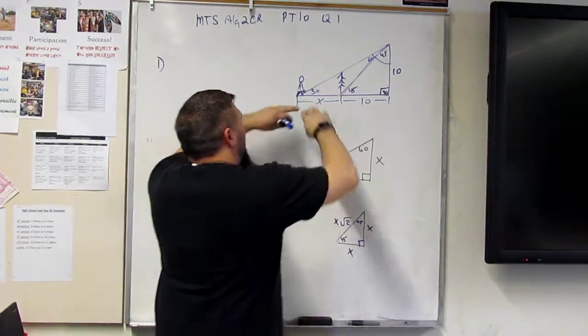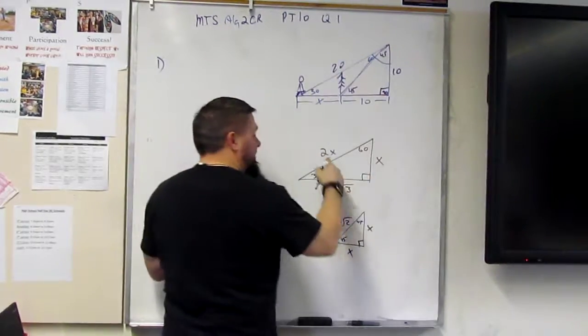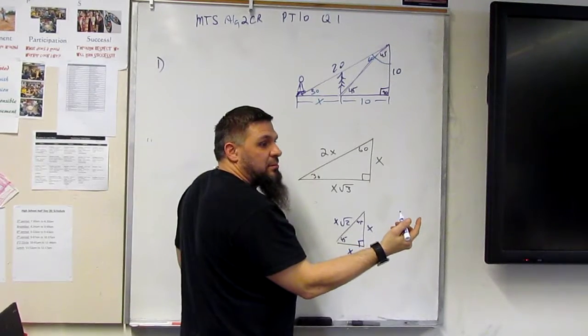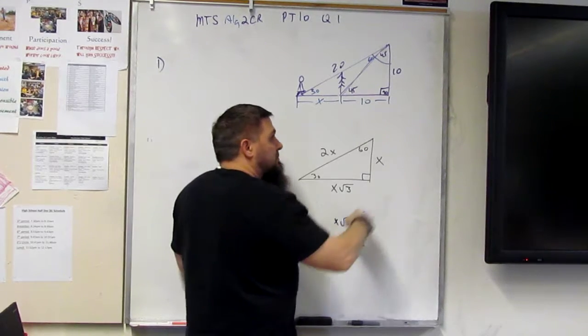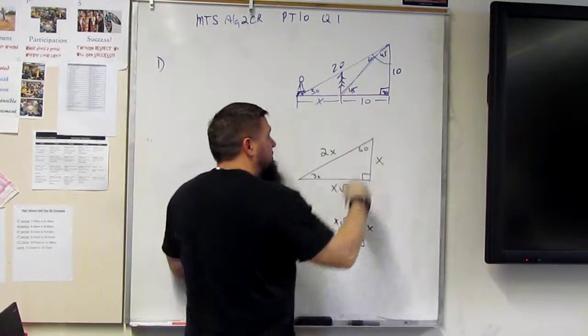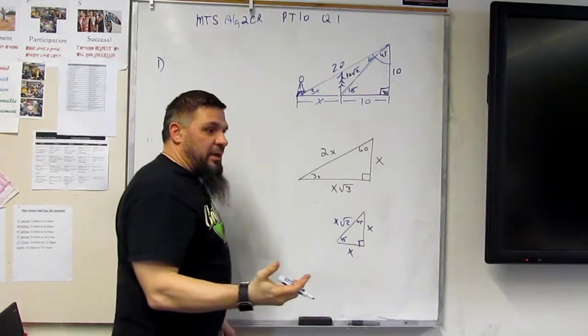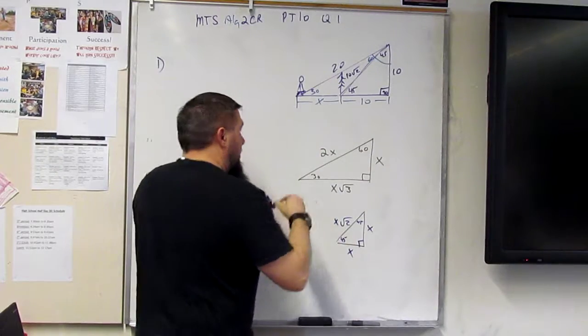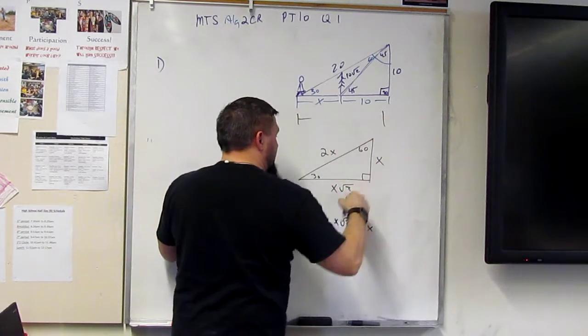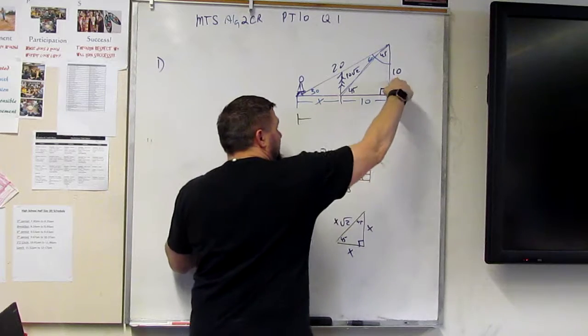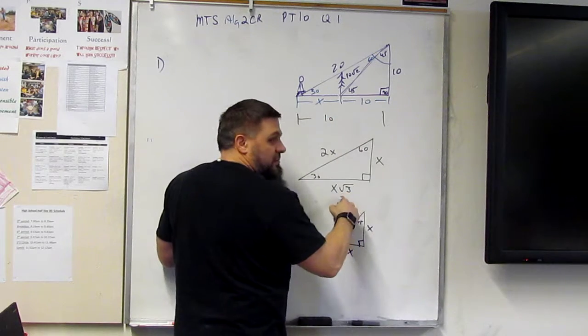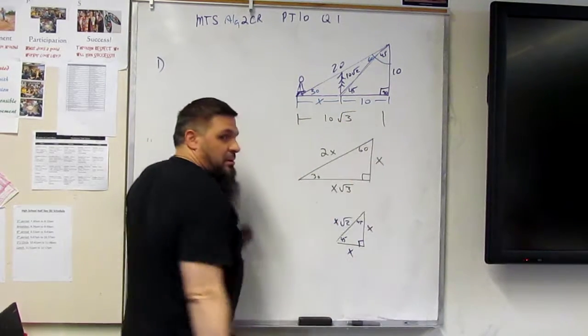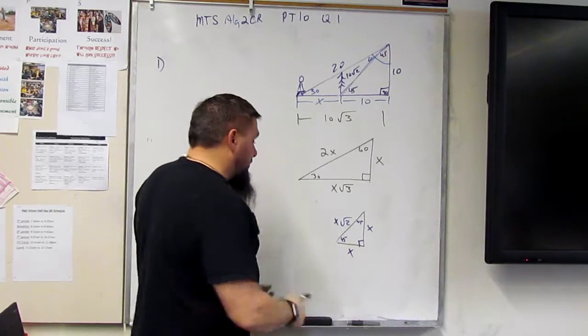Once I know that, I know this length is 20, because that's 2x. I know this length is 10 square root 2. Which means that this length right here, this whole length is this length. So it would be 10 square root 3. Right? So let's go through that one more time.